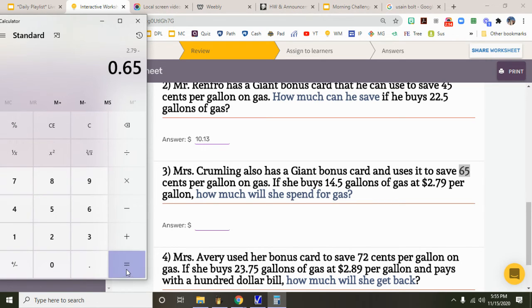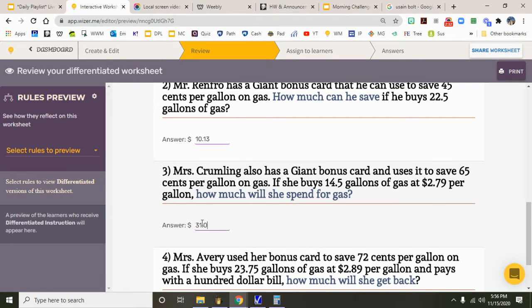That's how much Mrs. Crumley will pay per gallon, and she's gonna buy 14.5 gallons, so it's 14.5 times, and she's gonna spend $31.03.